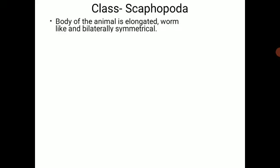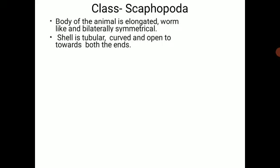We start with the first one, that is class Scaphopoda. The body of the animal is elongated and worm-like and bilaterally symmetrical. The shell is tubular, curved, and open towards both ends, with an outermost covering.